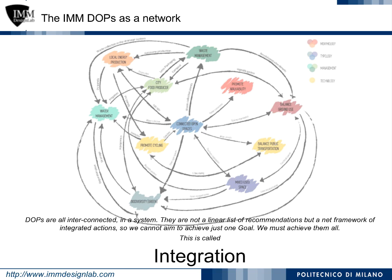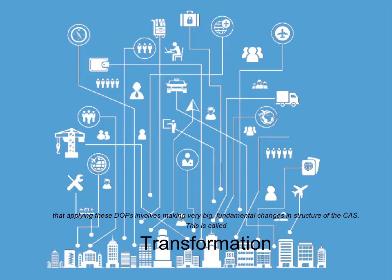By modifying individual malfunctioning components of the actual system, the entire complex system performance will be improved. In a nutshell, the design ordering principles are a net framework of integrated action.